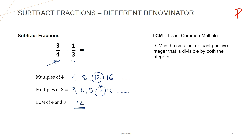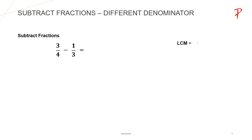So now we need to make both the denominators 12. For fraction 3 upon 4, we need to write this fraction in such a way that at the denominator's place we will have 12. So for 3 upon 4, I will multiply both numerator and denominator by 3. This way we have 4 multiplied by 3, that is 12, at the denominator's place, and 3 multiplied by 3, that is 9, at the numerator's place.